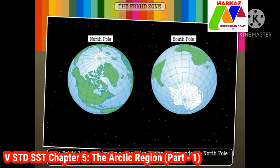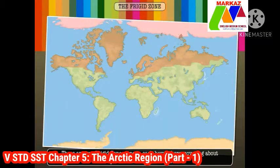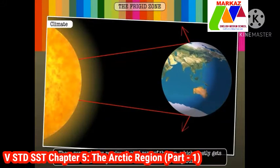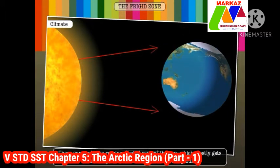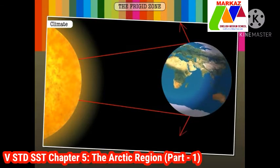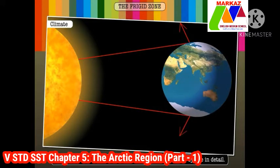The frigid zones cover the north pole and the south pole, covering about 8.24 percent of the earth's surface. They are the coldest areas on earth and are covered with ice and snow. These zones always receive slanted rays of the sun, which mostly get reflected by the ice and snow cover on the ground, making these zones cold throughout the year.